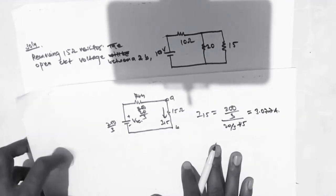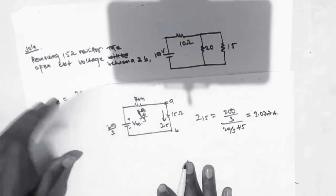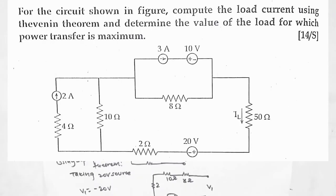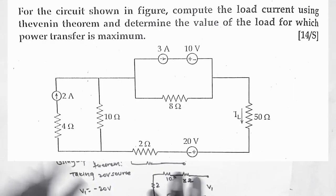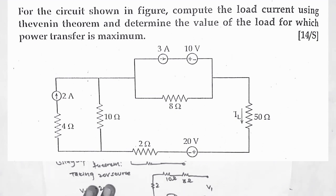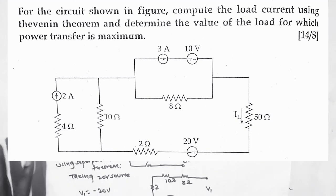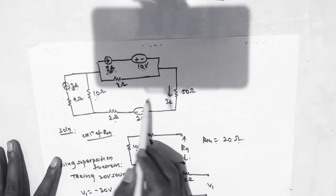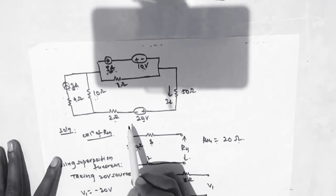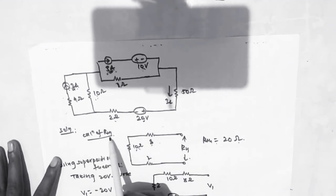Hope you got that. Now let's take some more examples. In this screen we can see a question: for the circuit shown in the figure, compute the load current using Thevenin's theorem, and determine the value of the load for which the power transfer is maximum. Here we have the given circuit, so first we will calculate the Thevenin's equivalent resistance.